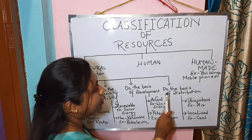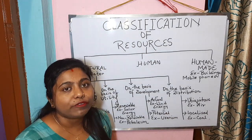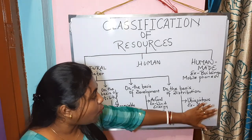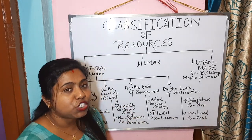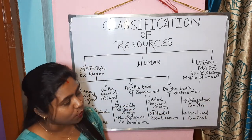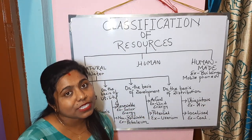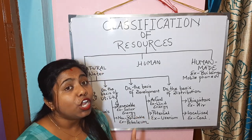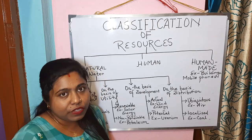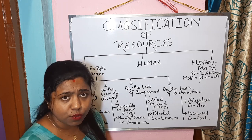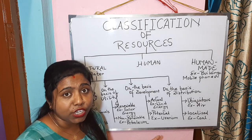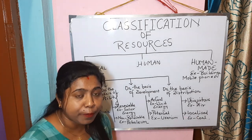On the basis of distribution, resources are classified into ubiquitous resources and localized resources. Ubiquitous resources are found everywhere — for example, air, water, and sunlight. Localized resources are found only in a particular locality — for example, coal and iron ore can only be found in specific places. Coal, for instance, can be found in Raniganj and mined there for utilization.